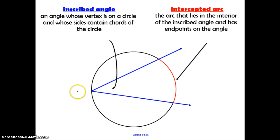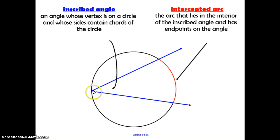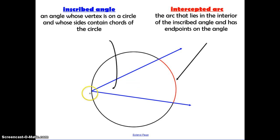An inscribed angle is an angle whose vertex is on a circle and the sides contain chords of the circle. Here we have this angle, and you can see that the vertex is on the circle, not at the center. Last time we talked about central angles that have their vertex at the center, but this is an inscribed angle with the vertex on the circle.